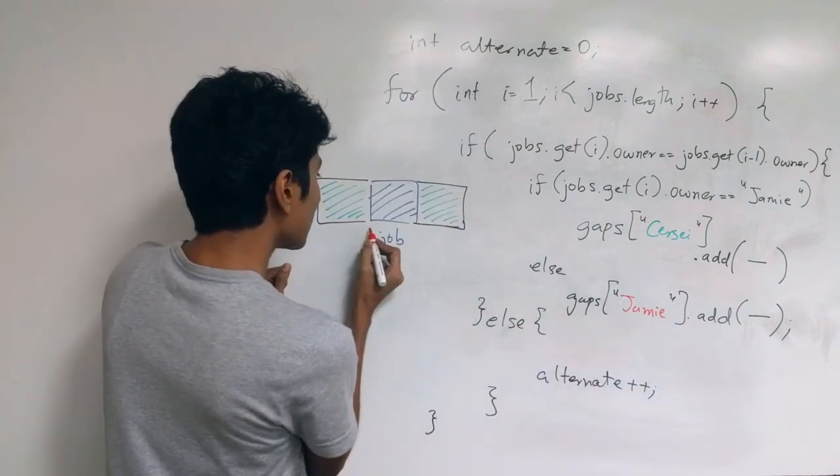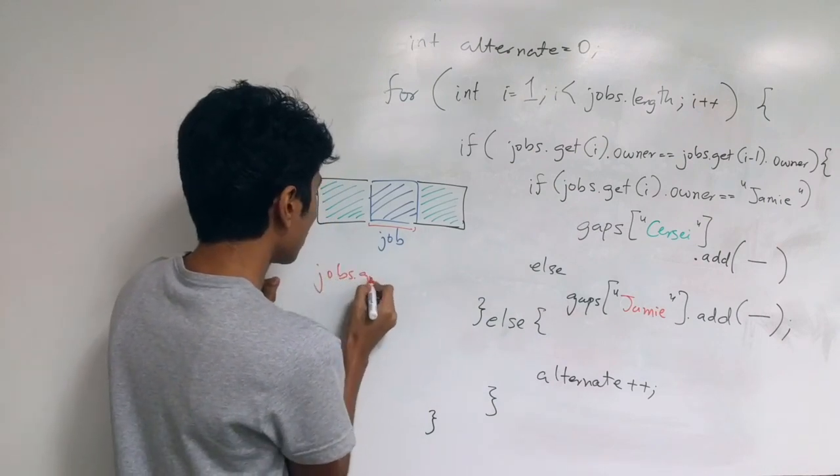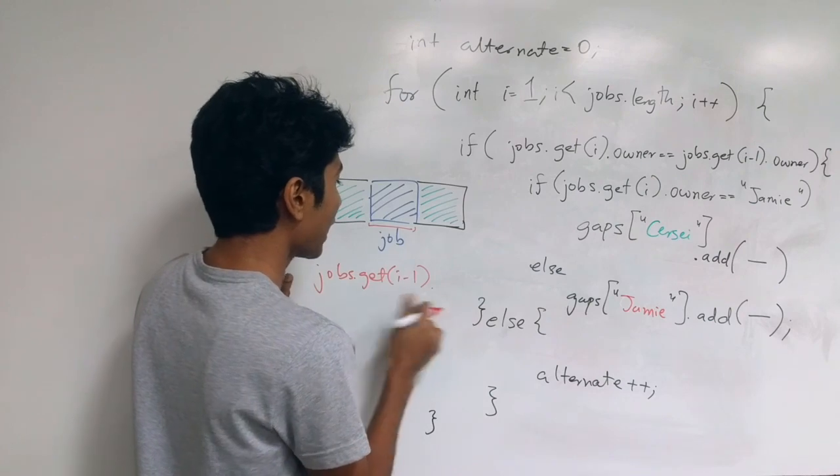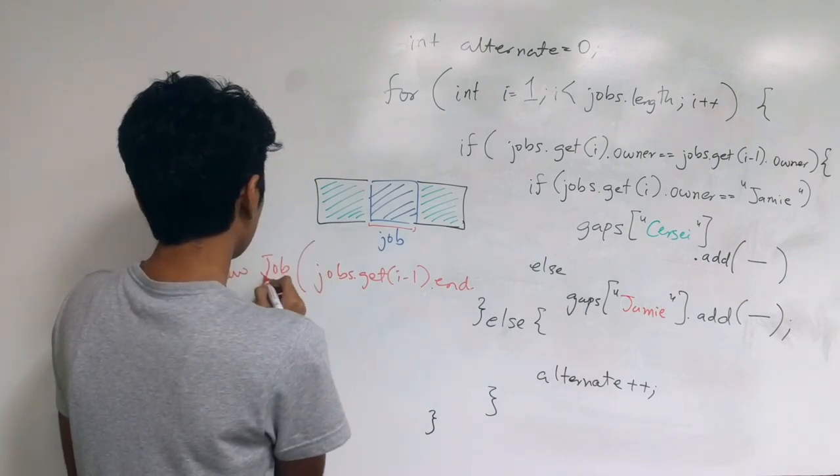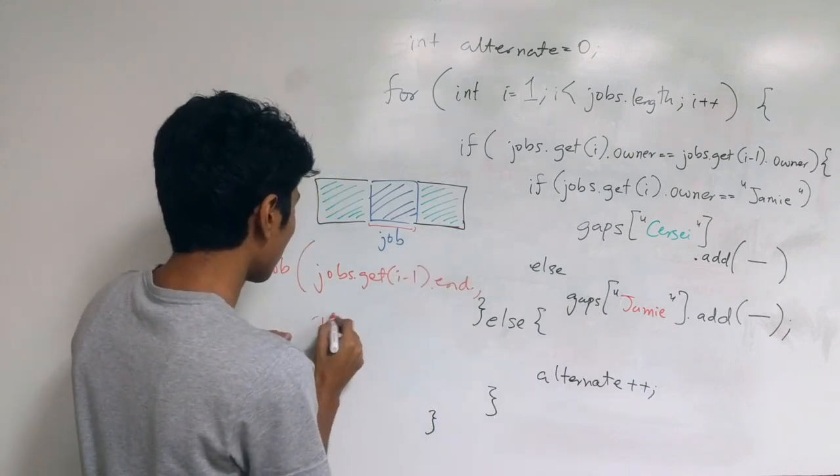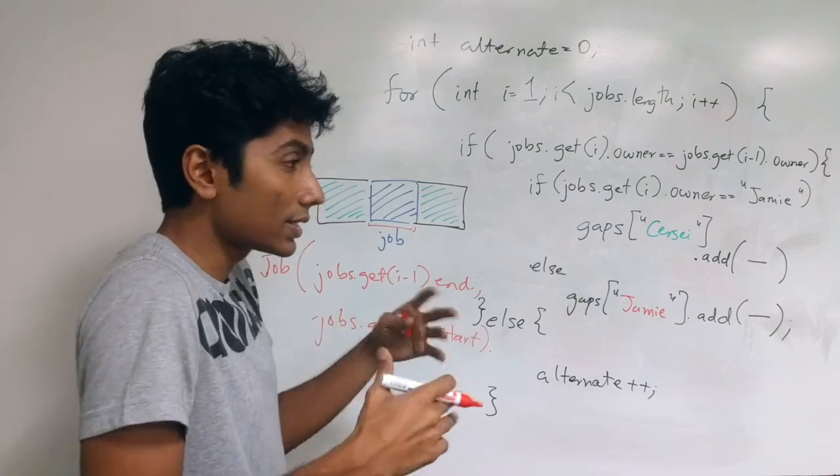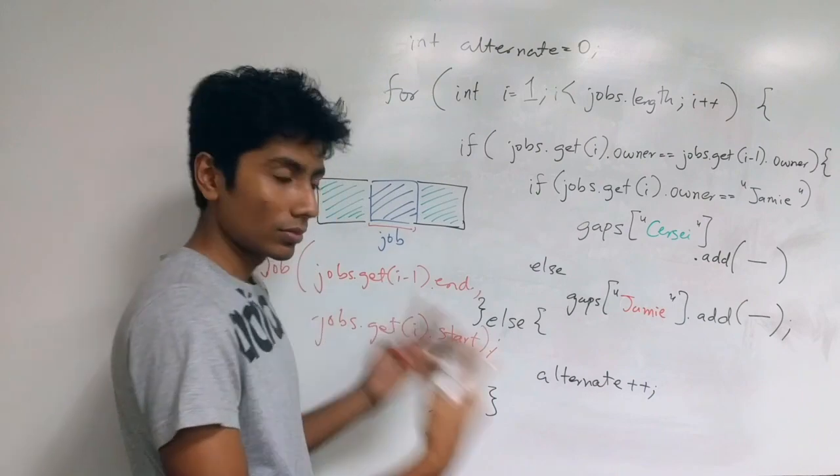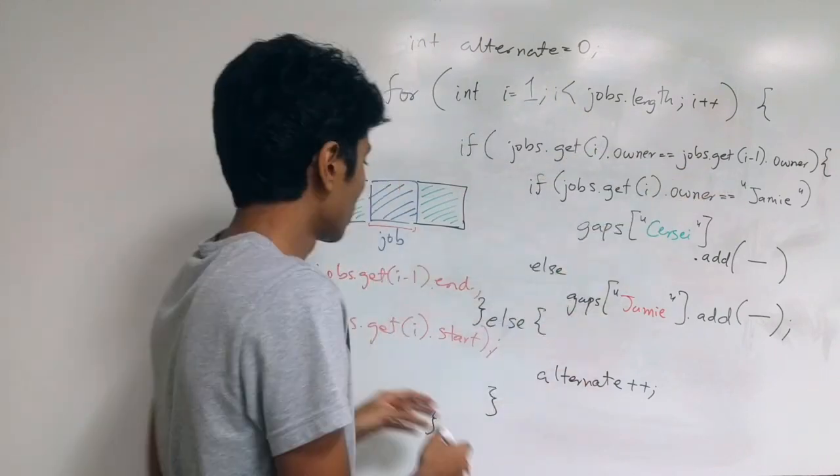So how do we construct this new task? You can say that Cersei's new job, the gap that she should fill up, is starting from the end of the first task. So that would be jobs.get i-1.end. And end is exclusive. So you can actually take this directly as the new start. When does her unassigned task end? It ends when her next job starts. So that is jobs.get i.start. And every start of a job is exclusive and every end of a job is exclusive. So this is correct code. And this is how you're going to construct the new job, which you actually want to assign here. And exact same thing has to be done for Jaime also.